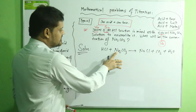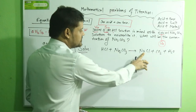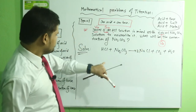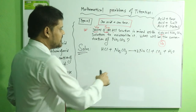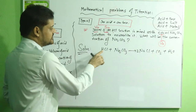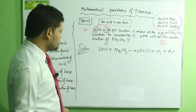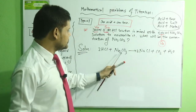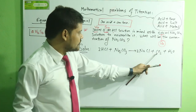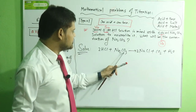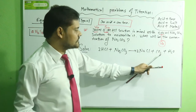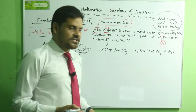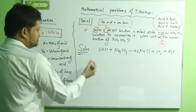To balance the equation: there are two sodium atoms on the left but one on the right in the product, so we write 2 in front of NaCl. For hydrogen: two on the left, one on the right, so we write 2 in front of H₂O. Chlorine: two on each side — balanced. Carbon: one on each side — balanced. Oxygen: three on each side (two plus one) — balanced. Now we have the balanced equation and can apply the volumetric equation.